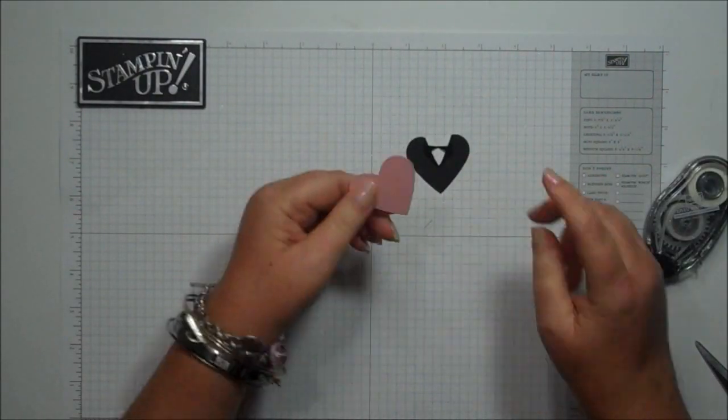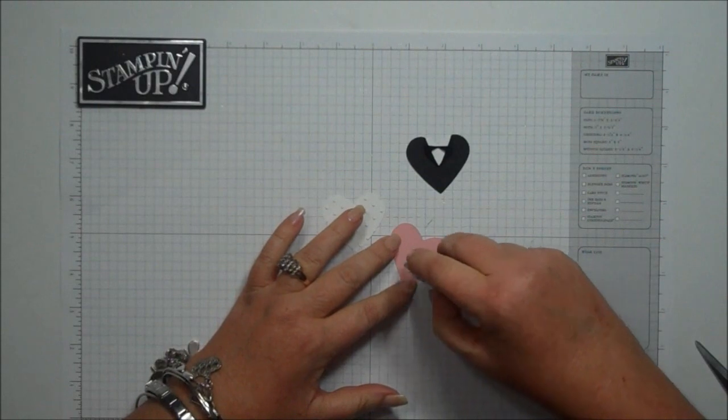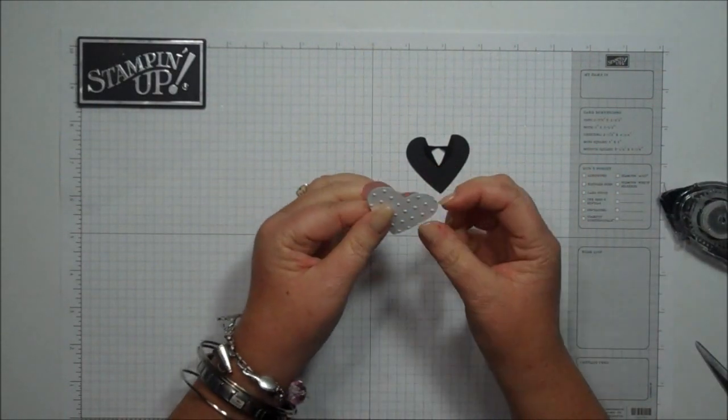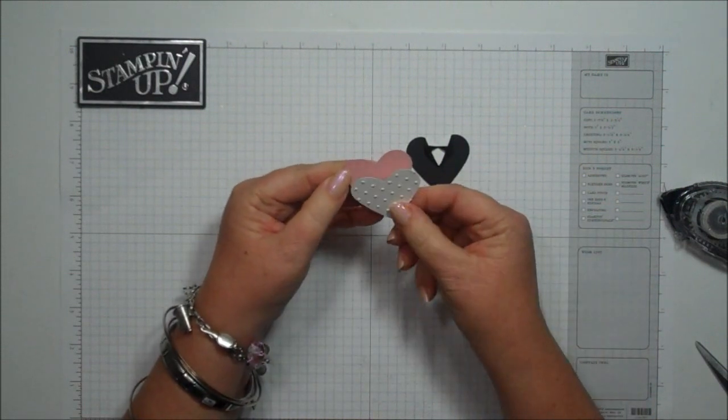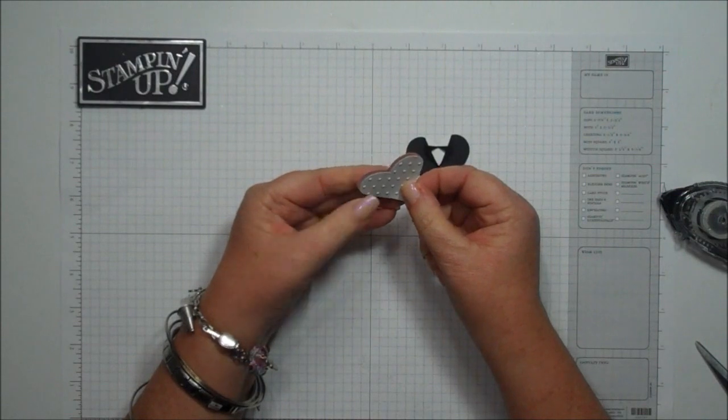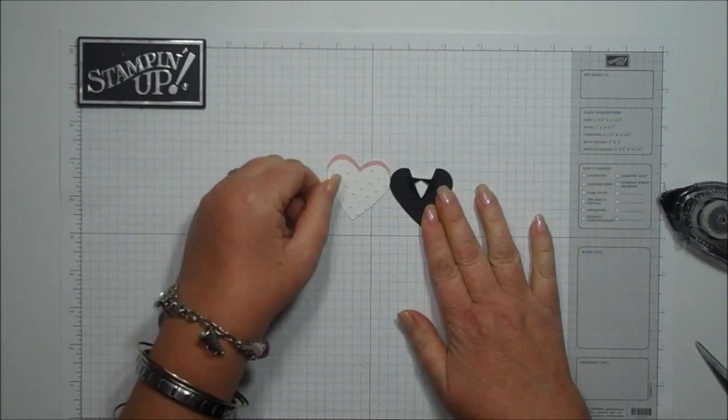So then for the bride, you're going to take the blushing bride heart, add some adhesive, and then you're going to line this one up behind your heart, but you're going to raise it up just a little bit. Just like that. Oh my gosh, I love it.